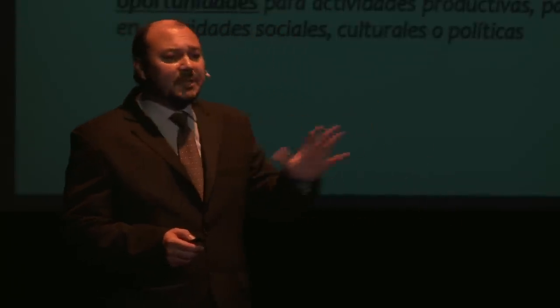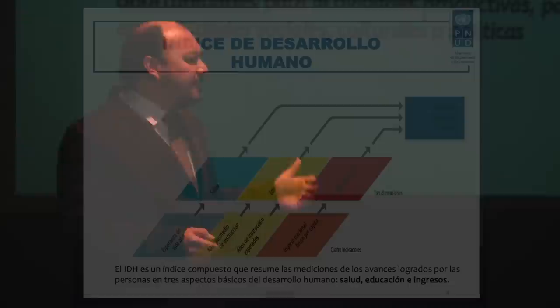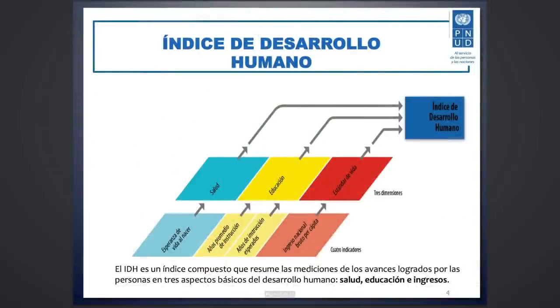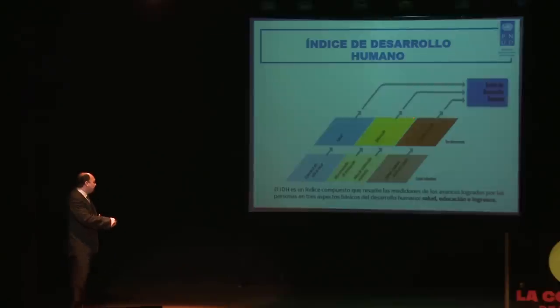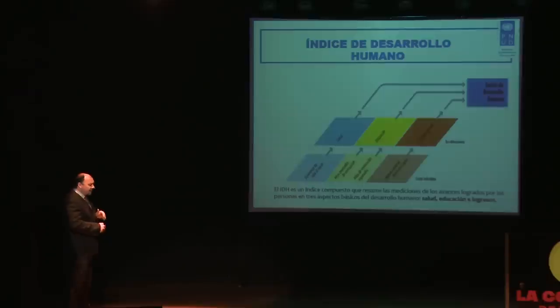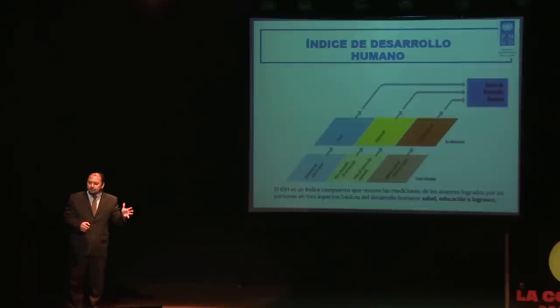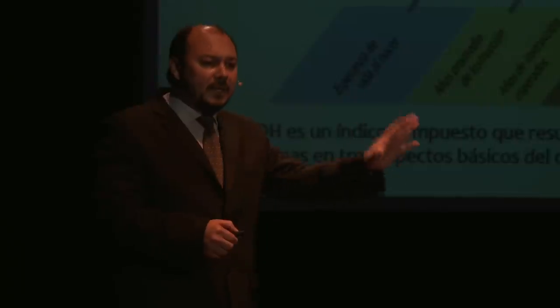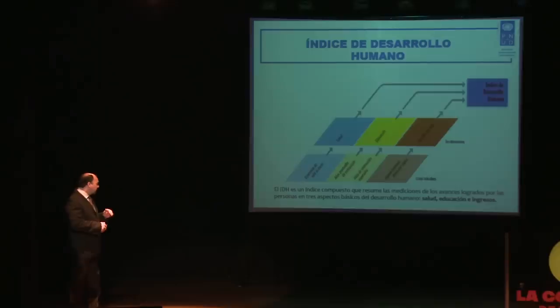¿Cómo medimos este concepto tan amplio? Para eso se ha creado un índice al que denominamos el Índice de Desarrollo Humano, que tiene básicamente tres dimensiones: salud, educación y estándar de vida, con indicadores que permiten medir estas dimensiones. Este concepto ha superado ampliamente al concepto del Producto Interno Bruto, que solamente mide el ingreso. Para medir la salud, tenemos la esperanza de vida al nacer.